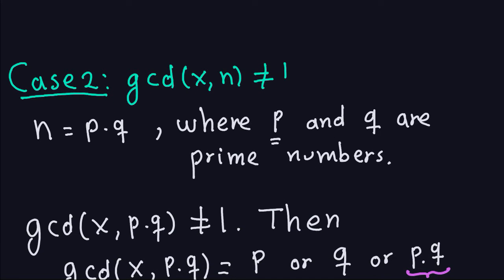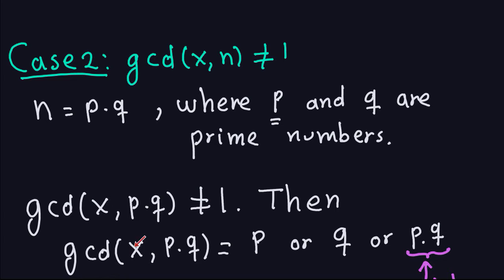Assuming that GCD(x, n) is not equal to 1, meaning that GCD(x, pq) is not equal to 1, then GCD(x, pq) has to be p, q, or pq. The GCD is the largest divisor between x and pq, so it has to be a divisor of pq. Because p and q are prime numbers, the only positive divisors of pq are 1, p, q, and pq. We are under the assumption it's not equal to 1, so we have these three possibilities: p, q, or pq.